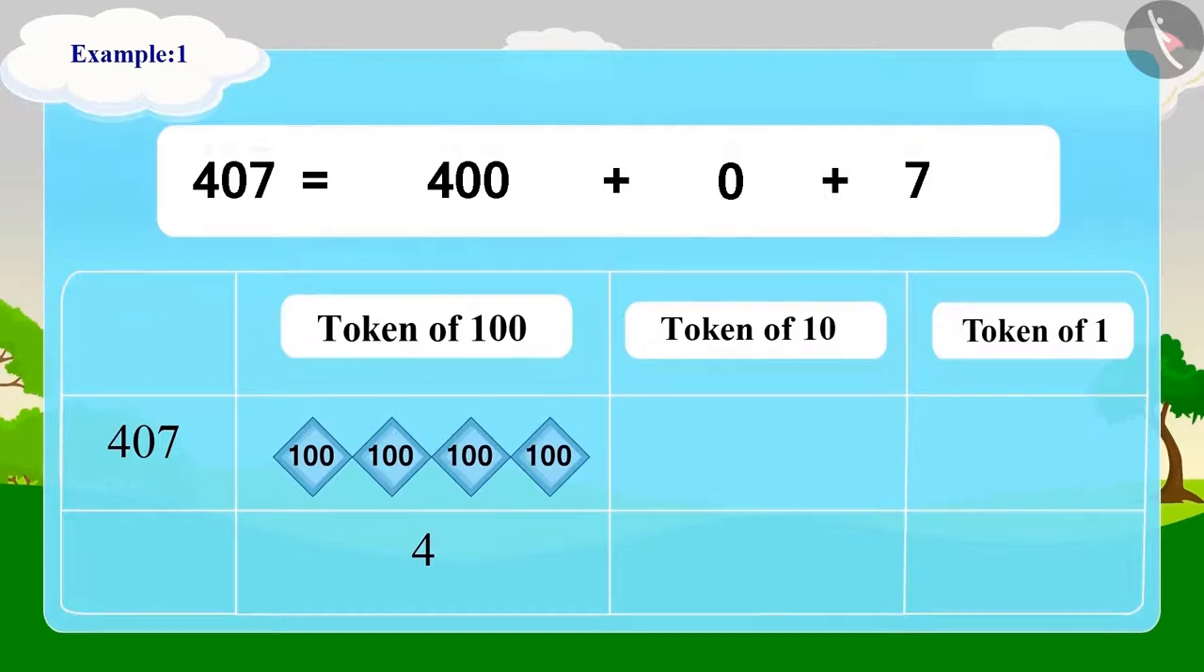...so we will not use any token of 10. We will write 0 in the place of the token of 10, and 7 will be shown using 7 tokens of 1 in this manner. In this way, we can write 407 toffees in tokens of 100, 10, and 1.